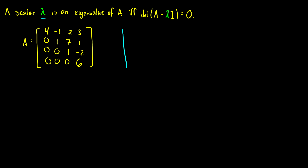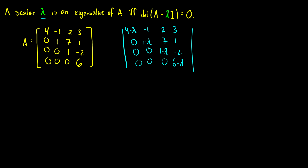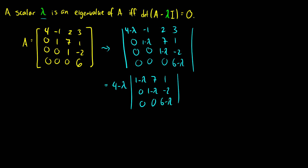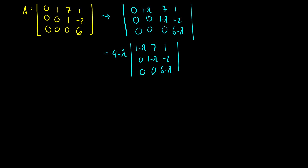The determinant of A minus lambda I gives a matrix with 4 minus lambda, negative 1, 2, 3, then 1 minus lambda, 1 minus lambda, 6 minus lambda, and entries 7, 1, negative 2 with the rest zeros. We do cofactor expansion down the columns. Since those entries are all zeros, we factor out the whole column, giving (4 minus lambda) times the determinant of the remaining 3x3 matrix with entries 1 minus lambda, 7, 1, 0, 1 minus lambda, negative 2, 0, 0, 6 minus lambda.